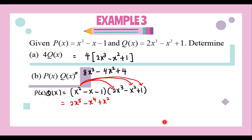Next, we focus on the second term, which is -x. We make sure -x multiplies with every term of Q(x). So, -x times 2x³ gives -2x⁴, then -x times -x² gives +x³, and -x times 1 gives -x.